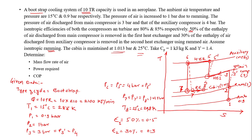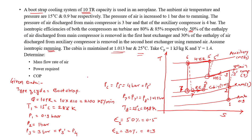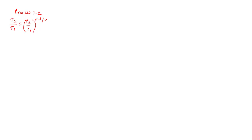Now we find temperatures at various points. For process 1 to 2, the ramming process is isentropic, so T2 by T1 equals (P2 by P1) raised to (gamma minus 1) upon gamma. Substituting the known values of T1, P2, and P1 into this formula, the temperature at point 2 comes out to be 296.8 Kelvin.